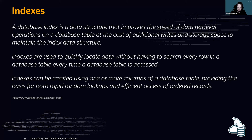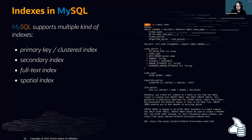Indexes can be created using one or more columns of a database table, providing a basis for both rapid random lookups and efficient access of ordered records. In MySQL we support multiple kinds of indexes: primary key (clustered index), secondary index, full-text index, and spatial index.